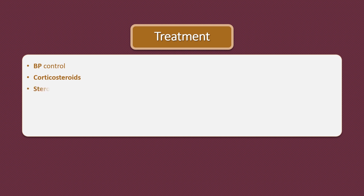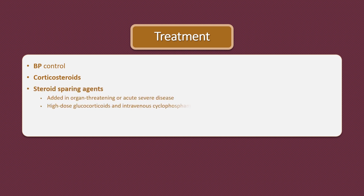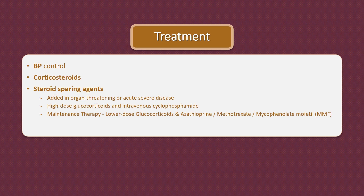Regarding treatment, control of blood pressure is very important. Steroids are used in low dose for milder cases. Management of organ-threatening or acute severe disease is with high-dose glucocorticoids and intravenous cyclophosphamide, followed by maintenance therapy with lower-dose glucocorticoids and azathioprine, methotrexate or mycophenolate mofetil. Hepatitis B should be treated after the initial treatment with steroids.